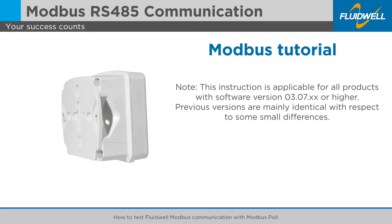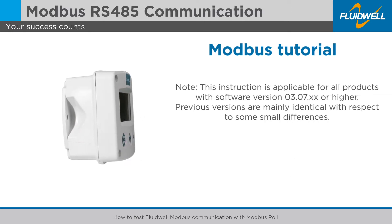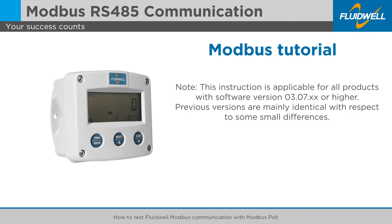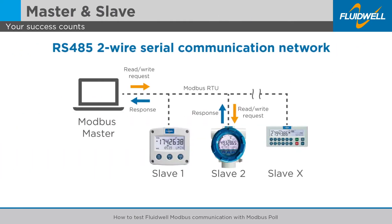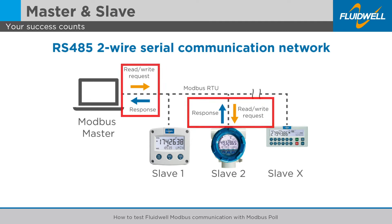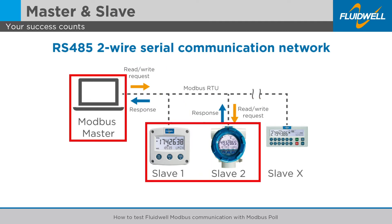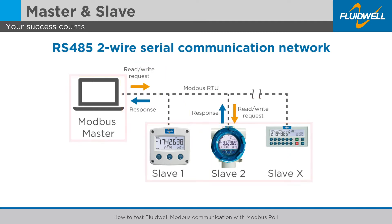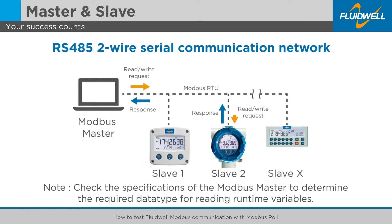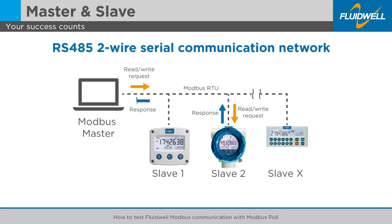Let's take a look at how this works. The Modbus protocol exchanges information using a request-response routine between a master and one or more slave devices. The master sends the request and the slave devices reply. All Fluidwell products are Modbus slave devices. Every slave must have a unique address on the communications bus.